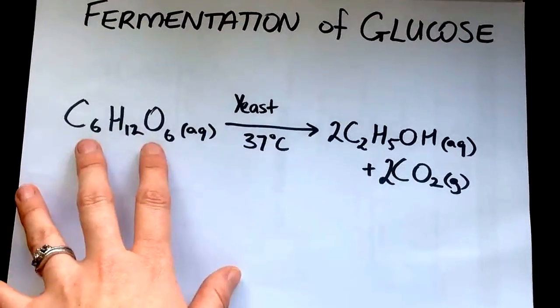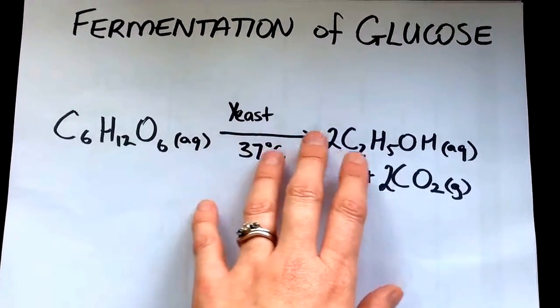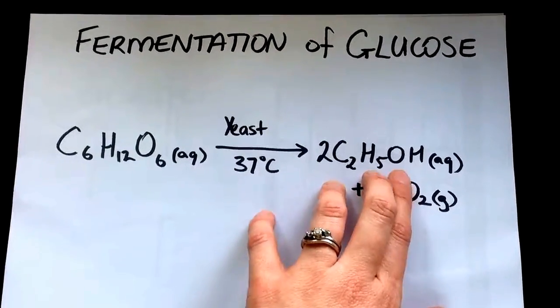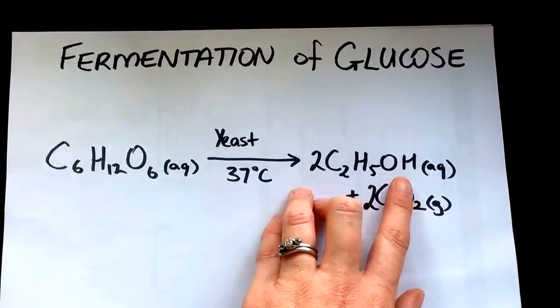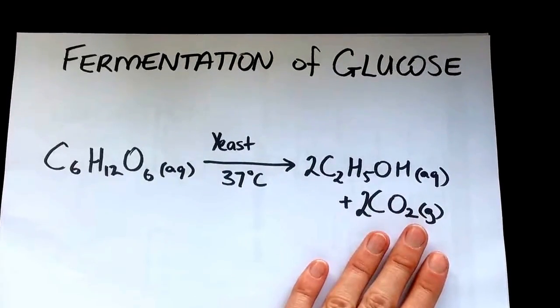So once you've broken down, you've got your glucose, it reacts with the yeast, you've produced your two ethanol units. So I've just written them as C2H5OH and you also get your two carbon dioxides.